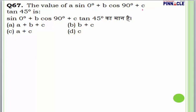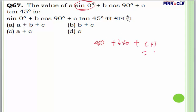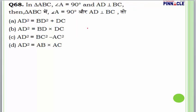Question 67: Value of a·sin0° + b·cos90° + c·tan45°. Since sin0° = 0, cos90° = 0, and tan45° = 1, the expression equals c. Answer is D.